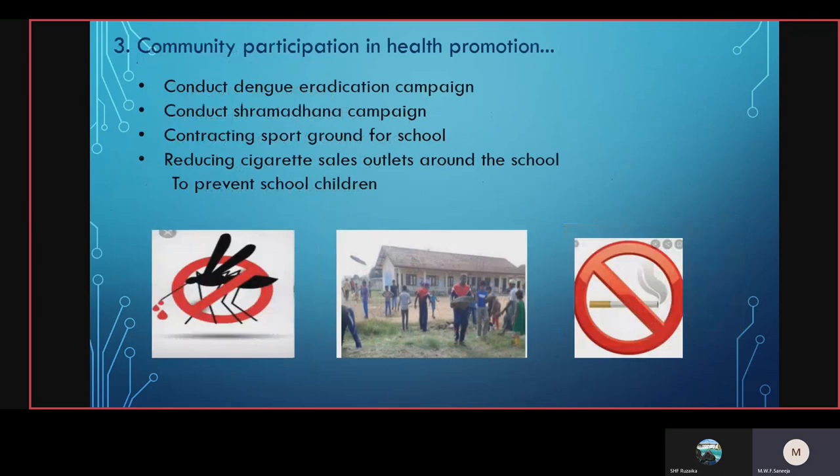The third strategy is community participation in health promotion. The community should conduct dengue eradication campaigns, conduct Ramadan campaigns, construct sport grounds for schools, and reduce cigarette sales outlets around the school to prevent school children from being introduced to smoking. These are some of the ways in which the community can aid school health promotion.